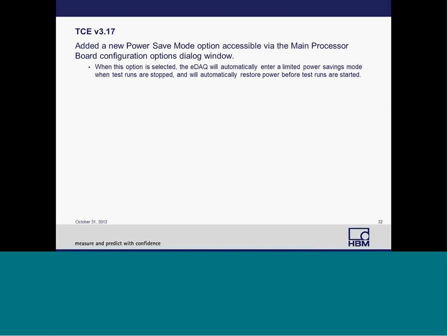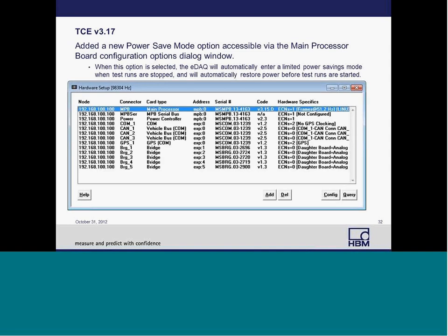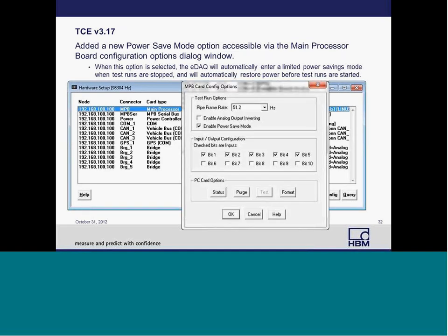TCE 3.17 has added a power save mode option, which is accessible in the main processor board of the hardware setup. When this mode is enabled, the EDAC will automatically enter a limited power savings mode when test runs are stopped, and will automatically restore power before test runs are started again. This is a great feature, especially if you're going to be testing for long periods of time with limited access to power. To activate this option, double-click on the main processor board in hardware setup, then check Enable Power Save Mode in the dialog box.